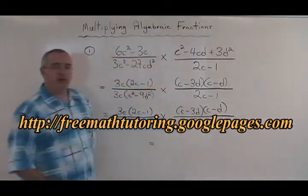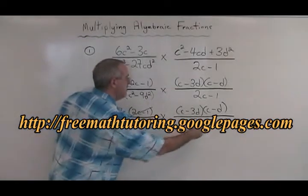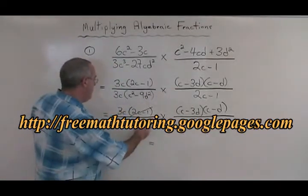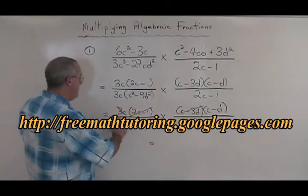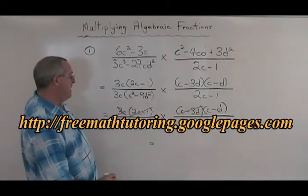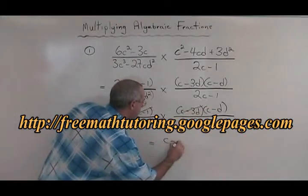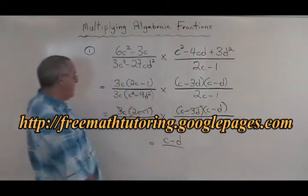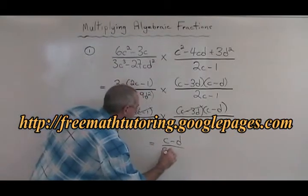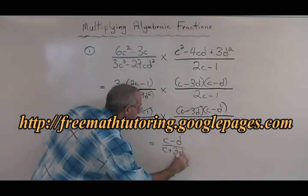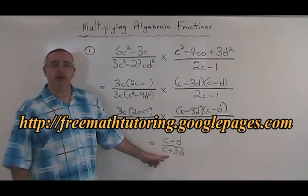Now we can start canceling. The (2c minus 1) here cancels with this one. The (c minus 3d) here cancels with this one. The 3c and the 3c cancel. All we're left with on the top is (c minus d), and all we're left with on the bottom is (c plus 3d). This expression cannot be further simplified, so we're finished.